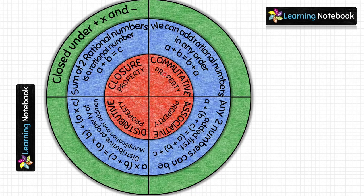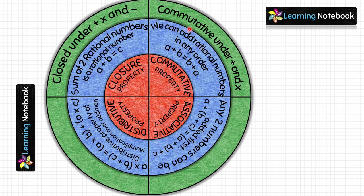For commutative property on the green circle, write: rational numbers are commutative under addition and multiplication. This means while adding two rational numbers we can change their order and the sum remains the same. Similarly, while multiplying, even if we change the order, the product remains the same. You can also write 'not commutative under subtraction and division.'